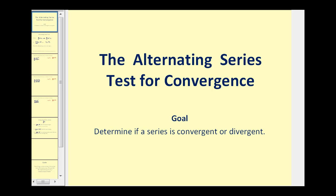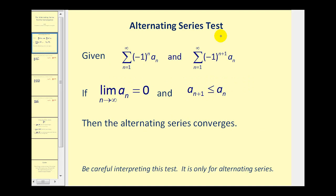Welcome to a video on the alternating series test for convergence. The alternating series test states: given an alternating series in one of these two forms, if the limit as n approaches infinity of a sub n equals zero — where a sub n is the non-alternating part of the formula that generates the terms — and if a sub n plus one is less than or equal to a sub n, meaning the series is decreasing, then the alternating series does converge.